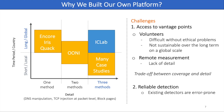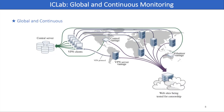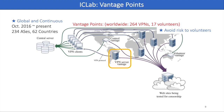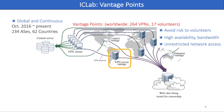Thus, we built our own platform iCELAB to fill this gap and give a comprehensive view of censorship. iCELAB offers global and continuous monitoring — it has been running since October 2016 in 62 countries. For vantage points, iCELAB utilizes commercial VPNs and a small number of volunteer-operated devices. Using VPNs gives us benefits: we can avoid risk to volunteers, and VPNs guarantee high availability, sustainability, and reasonable bandwidth in many different countries. Furthermore, the VPNs allow us unrestricted access to the network, unlike phone or web applications.